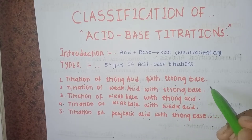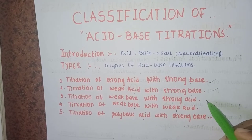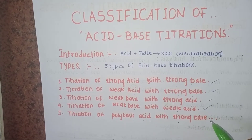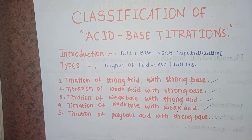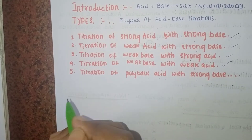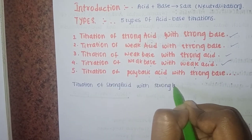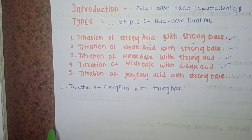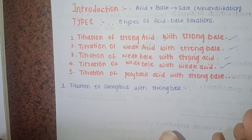The most important is the first four types. Polybasic acid is just a concept-wise type, but the most important are the first four. Now the first topic is: what is titration of strong acid with strong base? We will discuss titration of strong acid with strong base.